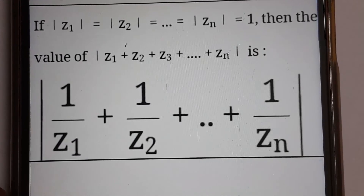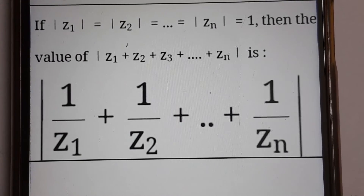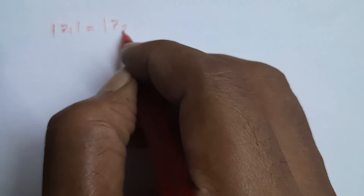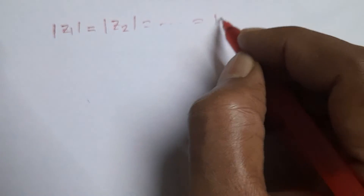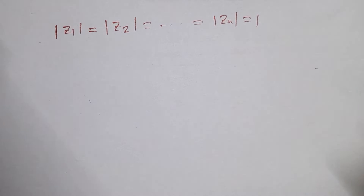Here z₁, z₂, ..., zₙ are complex numbers. What is given to us is that |z₁| = |z₂| = ... = |zₙ| = 1.